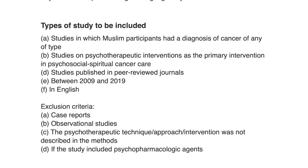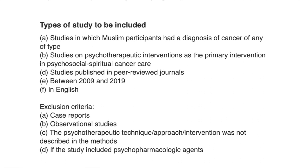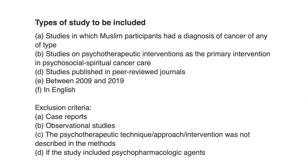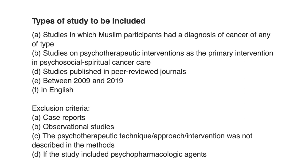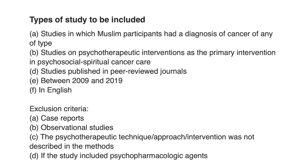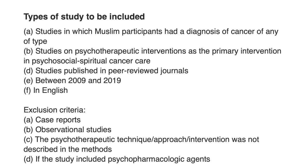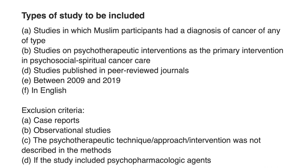What articles did we exclude? We excluded articles that were case reports or observational studies — we actually wanted an intervention of some sort. We excluded articles in which the psychotherapeutic intervention was not well described, which was a judgment we had to make. And we excluded articles that reported on studies including psychopharmacologic agents, because it would be hard to decide which was the effective intervention — the psychopharmacologic agent or the psychotherapeutic intervention. So we tossed those studies as well.